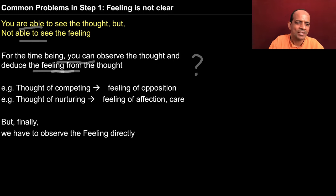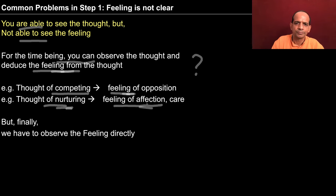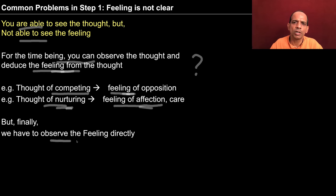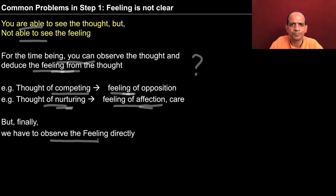If you start observing the thought and analyze it a bit, you can find out the feeling. If you have the thought of competing with the other, there is opposition involved. If you have the thought of nurturing the other, there is affection or care. If you are thinking of taking revenge, there is opposition. If you feel grateful, there is a feeling of relationship. This way you can deduce what feeling is guiding your thought — but finally you have to develop the capacity to observe the feeling directly.